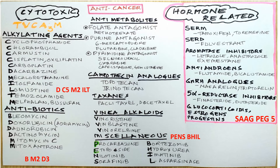Among the pyrimidine antagonists we have 5-fluorouracil, cytarabine, capecitabine, and gemcitabine. Among the camptothecine analogues we have topotecan and irinotecan. The taxanes are paclitaxel and docetaxel. The vinca alkaloids include vincristine, vinblastine, and vinorelbine.